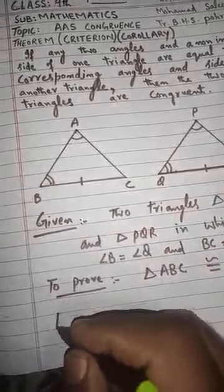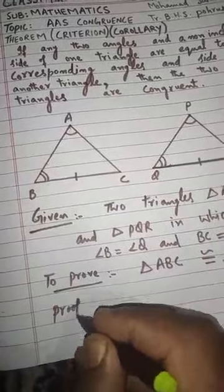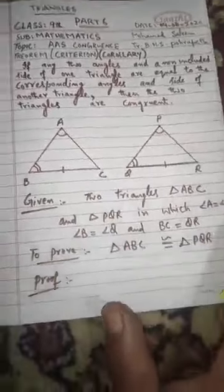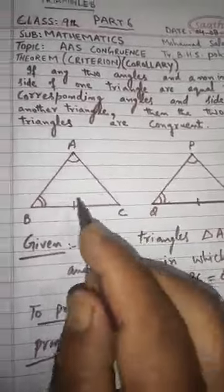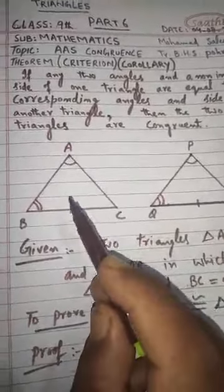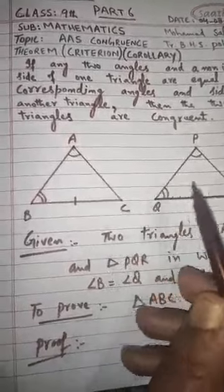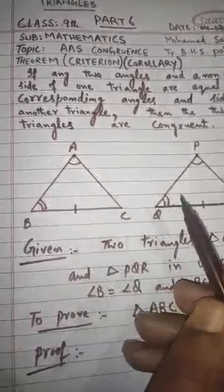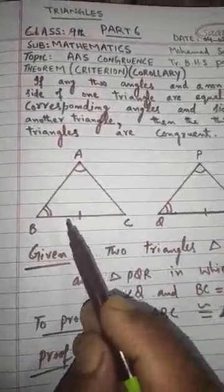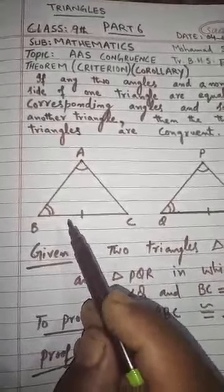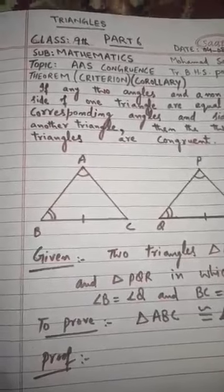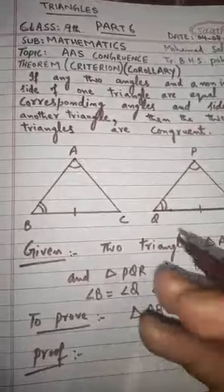How do we prove this? We will apply the previous theorem — the angle-side-angle congruence theorem which we proved in lecture five. If we can show that angle C equals angle R as well, then the theorem becomes angle-side-angle.